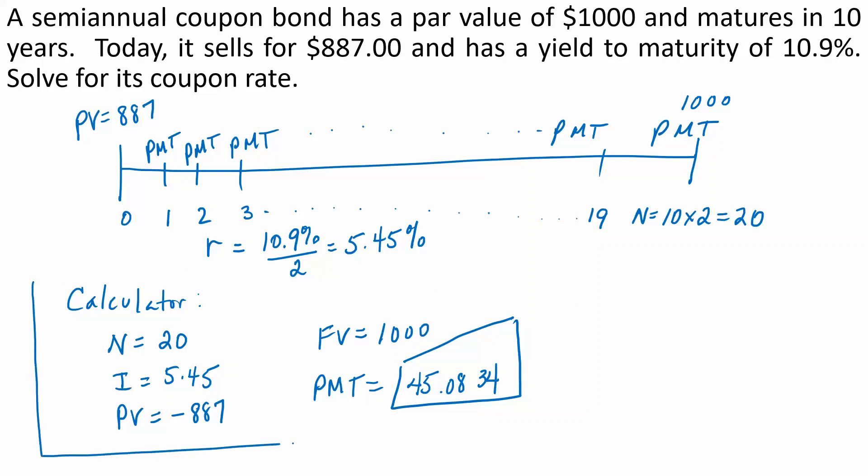Now, remember that is giving us the semiannual payment, but coupon rates are APRs.